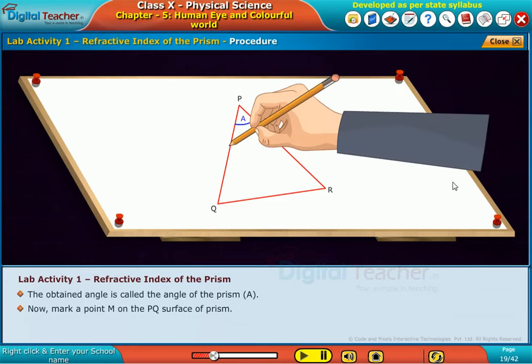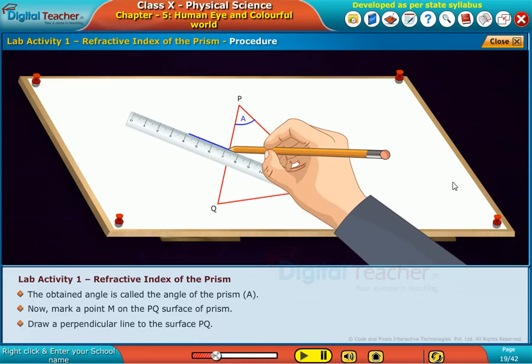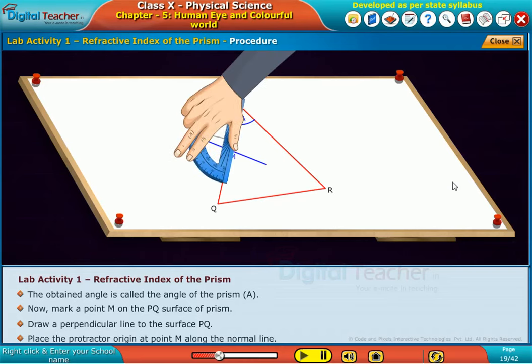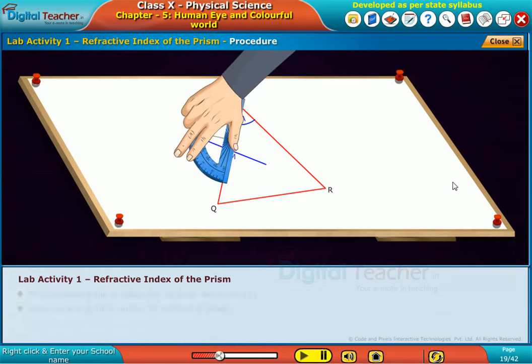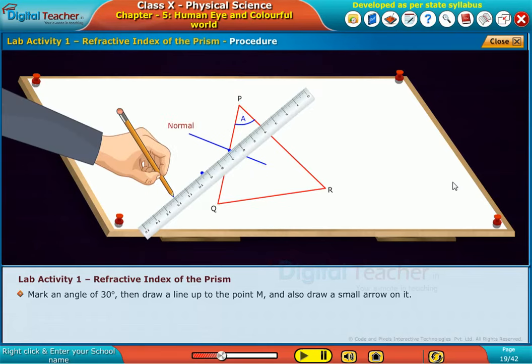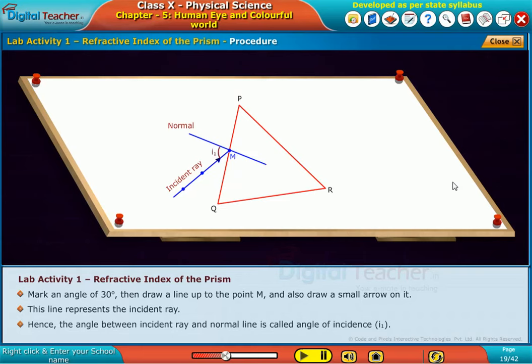Now, mark a point M on the P Q surface of prism. Draw a perpendicular line to the surface P Q. Place the protractor origin at point M along the normal line. Make an angle of 30 degrees, then draw a line up to the point M and also draw a small arrow on it. This line represents the incident ray. Hence, the angle between incident ray and normal line is called angle of incidence, I one.